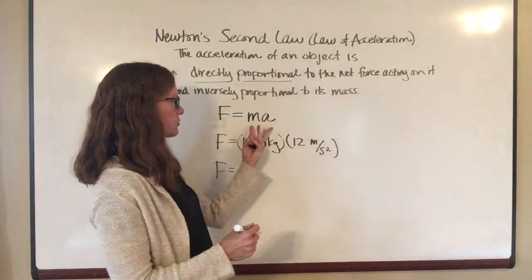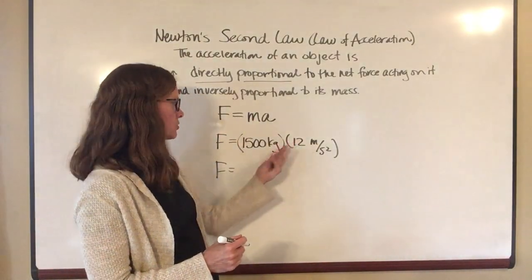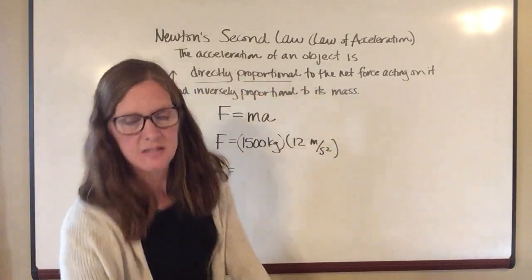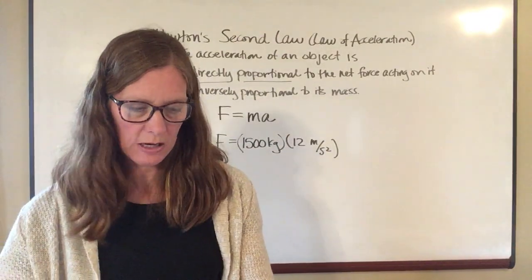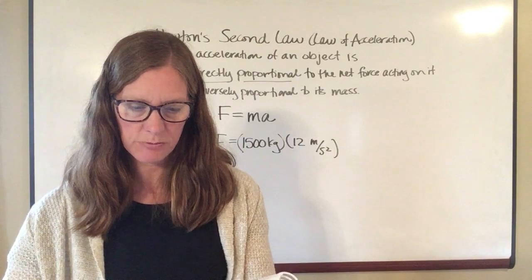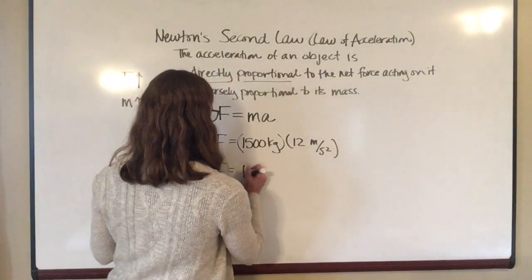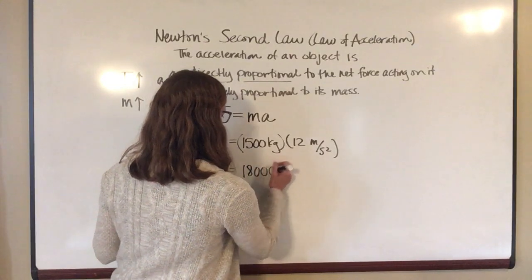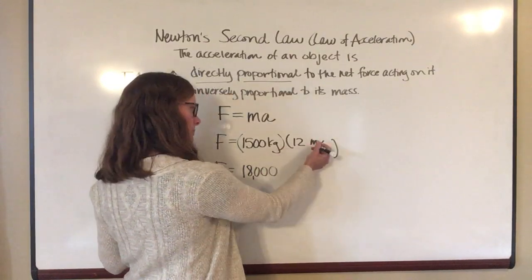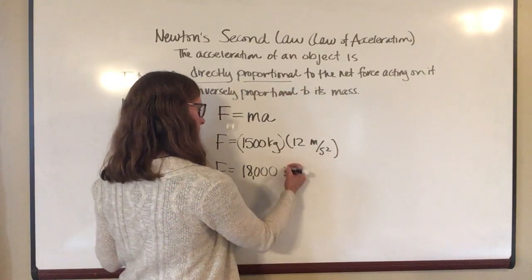And so when I multiply that together, remember when two letters are next to each other, it just means multiplication. So I'm going to take 1,500 times 12. And when I do that, that's going to give me an answer of 18,000 newtons. So it's kilogram meter per second squared, but that's the same thing as a newton. So it's 18,000 newtons.